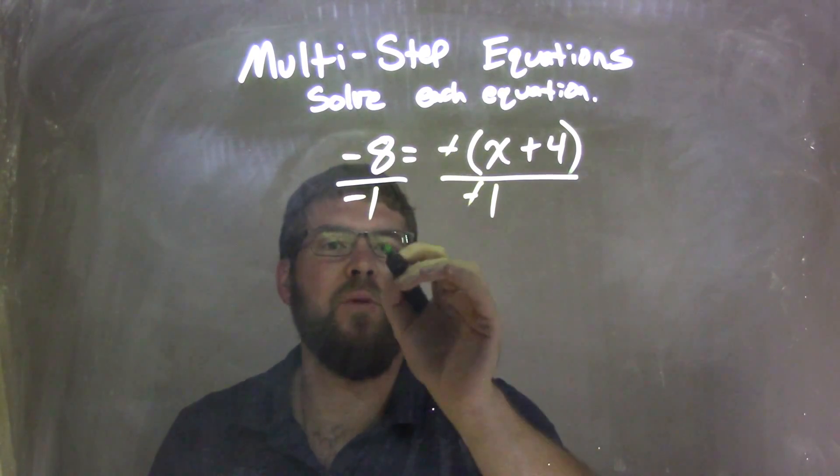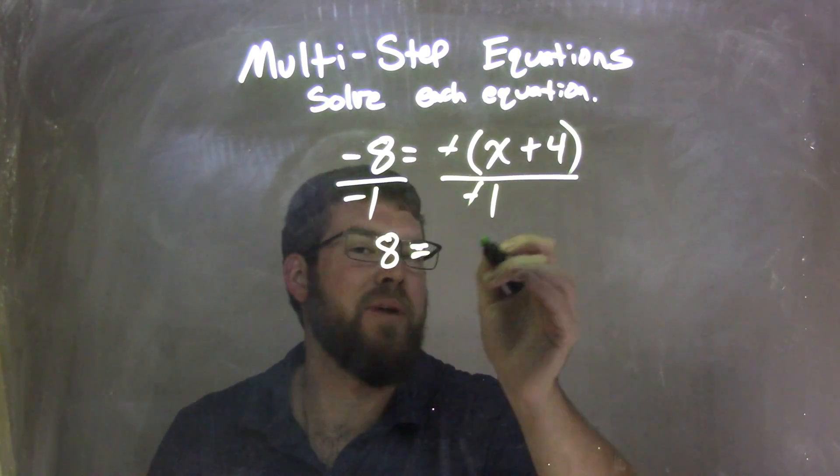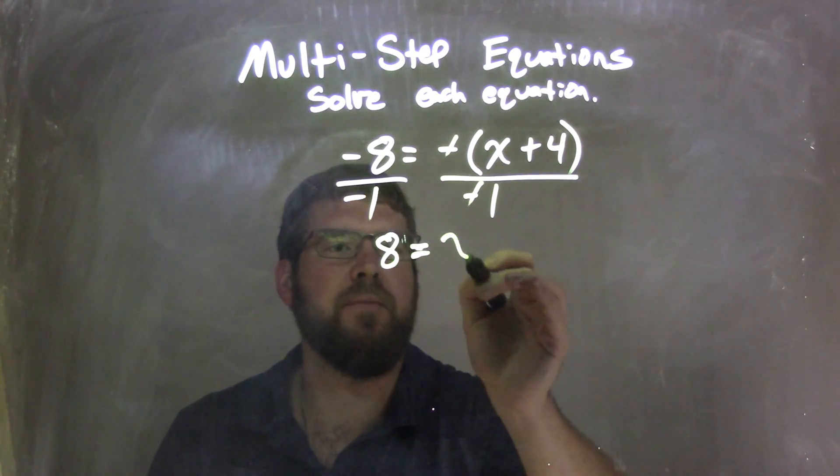Negative 8 divided by negative 1 is a positive 8. So now we just have, no need for the parentheses here, 8 equals x plus 4.